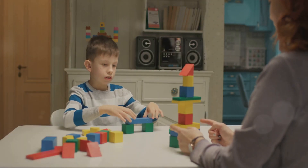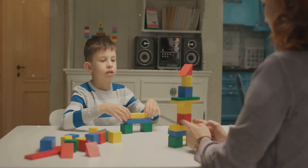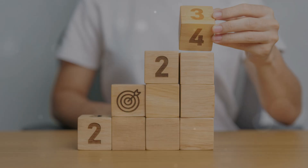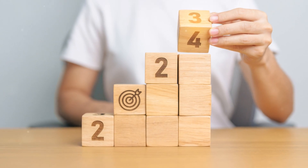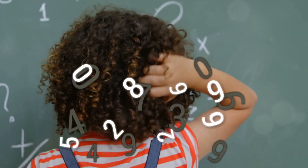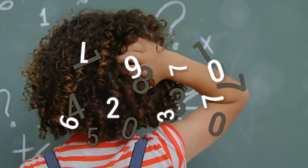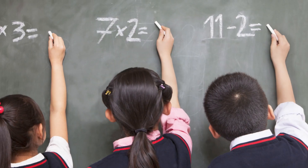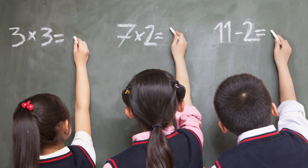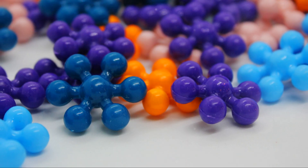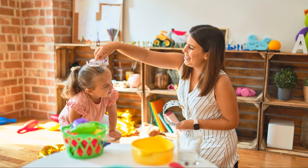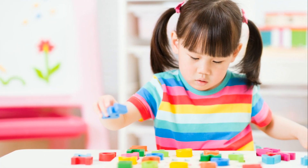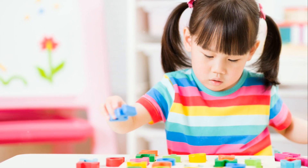Pattern blocks can also be used to visualize arrays, which are rectangular arrangements of objects. For instance, to illustrate 4 times 5, have the student create an array with 4 rows of 5 pattern blocks. The total number of blocks in the array, 20, represents the product of 4 times 5. Now let's explore division with pattern blocks. Suppose you want to teach the division fact 12 divided by 4. Have the student start with 12 pattern blocks, then guide them to divide the blocks into 4 equal groups. By counting the number of blocks in each group, they'll see that 12 divided by 4 equals 3.